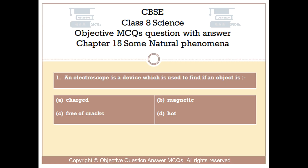Question number 1. An electroscope is a device which is used to find if an object is: Option A, Charged. Option B, Magnetic. Option C, Free of cracks. Option D, Hot.